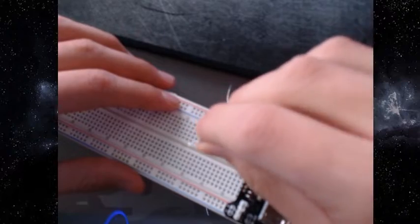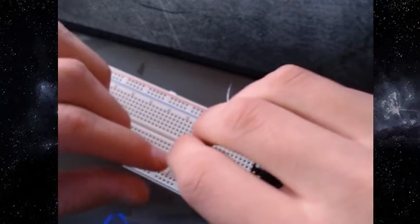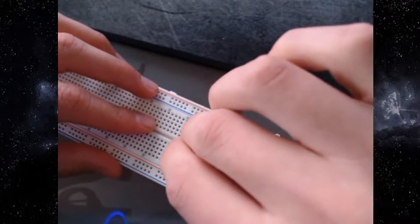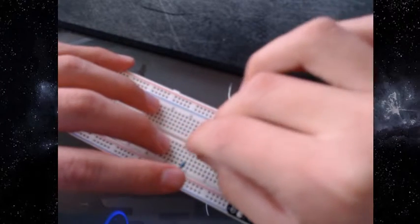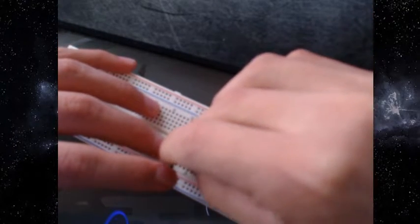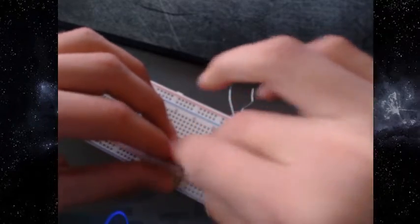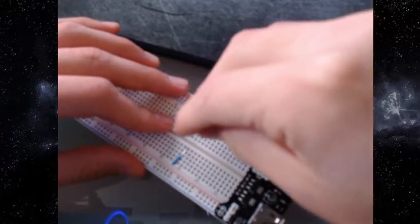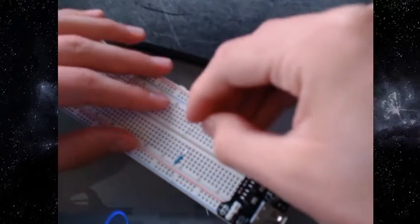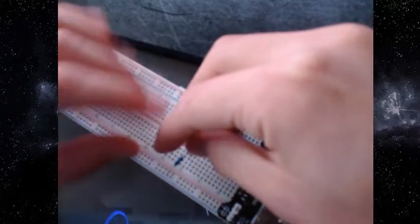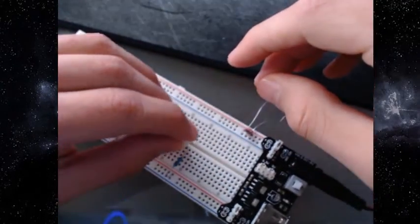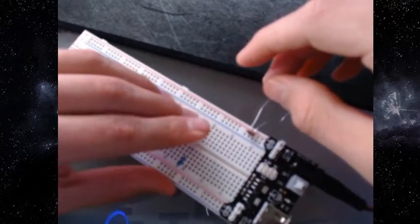First, it will be the resistor. It will be a 330 ohm resistor and we can connect it from positive to the breadboard. Then it will be the LED light that will connect the positive side to the free side of the resistor, and the negative side will be changed to the other half of the breadboard.